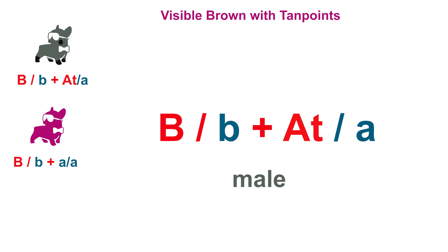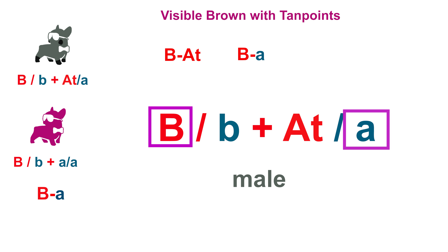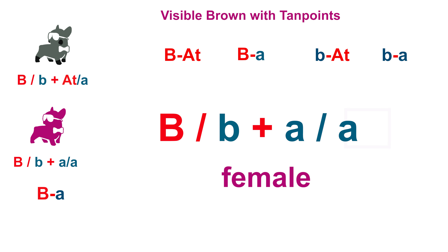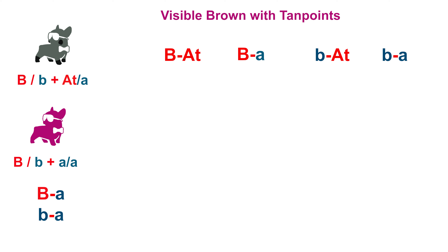Our first task is to come up with every possible arrangement that could be passed from dad. We could have B/AT, B/A, b/AT, or b/A. Our dam is Bb, AA, so all of her possible arrangements are either B/A or b/A. You could come up with four arrangements of the same thing, but when pairing together like this, there's no need to write them out four times because you'll arrive at the same answer with less work.